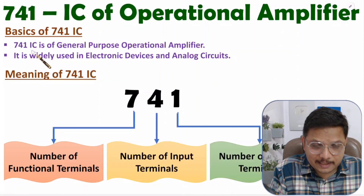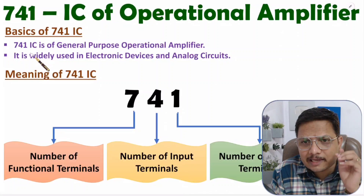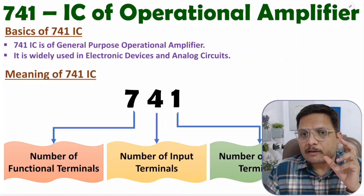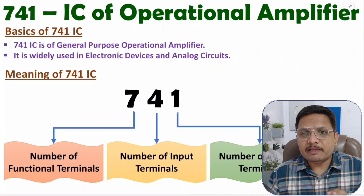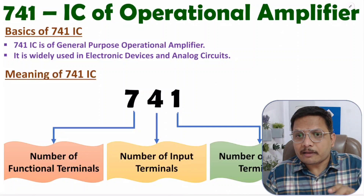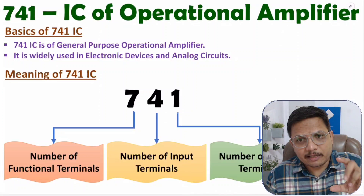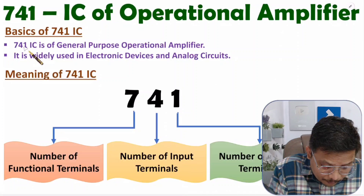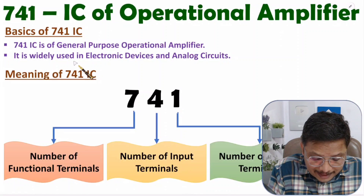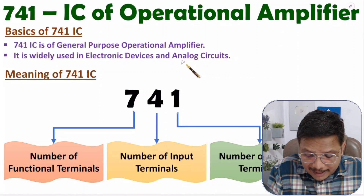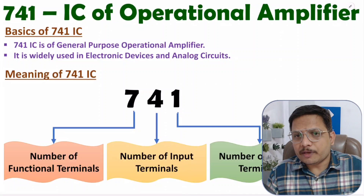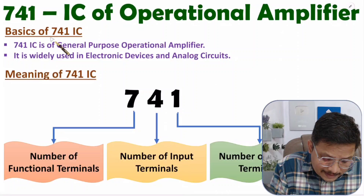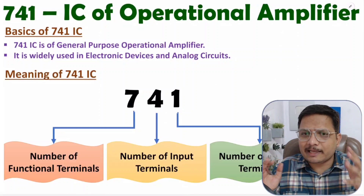741 IC is a general purpose operational amplifier IC. With this IC, we have 8 terminals, and inside a single IC we have 1 operational amplifier. This IC is widely used in electronic devices, analog circuits, and linear integrated circuits.